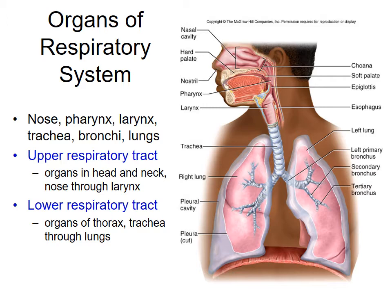Let's take a look at the main items involved in the respiratory system. Go ahead and locate the nose, the pharynx in the back of the throat region, the larynx — more commonly known as your voice box — your trachea or windpipe, the bronchioles which are the divisions that come off the trachea, and finally the lungs that surround the bronchial tree.